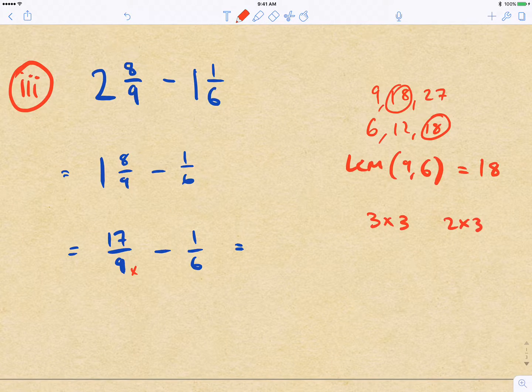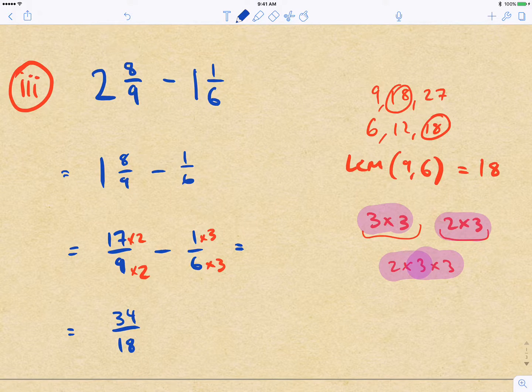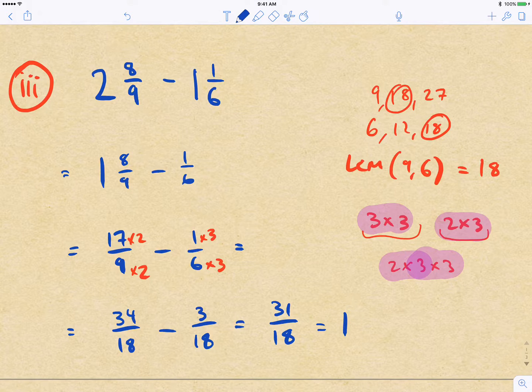Or you might recall if we break them down into their prime factorization, we've got 3 times 3 and 2 times 3, and so the smallest number that has all of that in it is 2 times 3 times 3. So it's got the 3 times 3 from here, and it's got the 2 times 3 from there. So that gives us our 18. So here we're just going to be multiplying by 2. Here we multiply by 3. And so we can get our equivalent fractions, which is 34 on 18 minus 3 on 18 equals 31 on 18, which gives us 1 13/18.